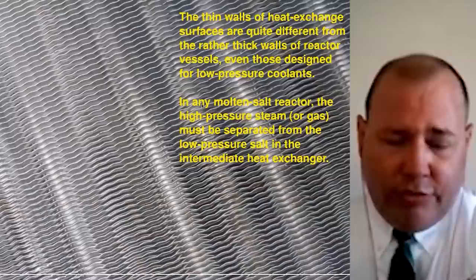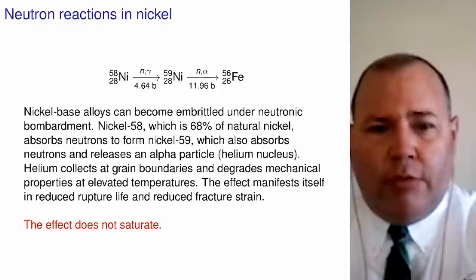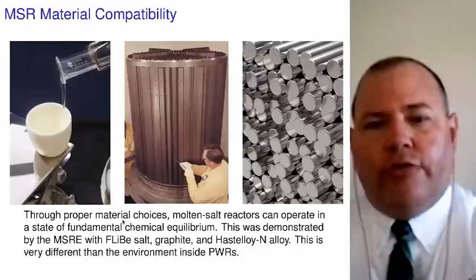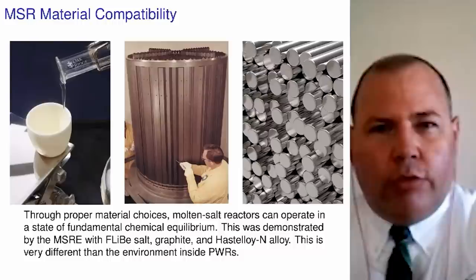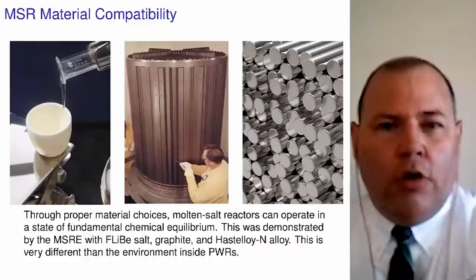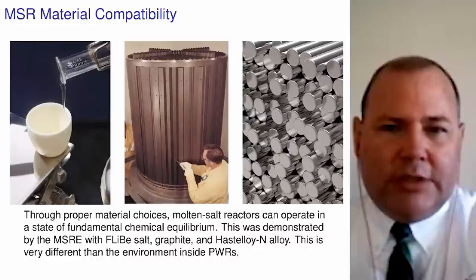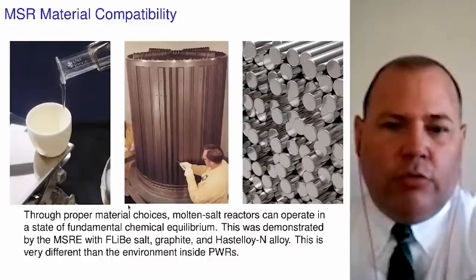The takeaways: go with FLiBe salt — proven from MSRE operation — go with Hastelloy-N, and go with graphite moderation. These three materials choices enable the molten salt reactor to operate in a state of chemical equilibrium. To contrast: in today's light water reactors, the water is not in chemical equilibrium with the zirconium cladding, and the zirconium cladding is not in chemical equilibrium with the uranium dioxide pellet. The fact that we were able to build reactors over 50 years ago with materials in chemical equilibrium is absolutely remarkable, and I think we should be talking more about this. It gives us a lot of confidence to go forward in the near term with safe and efficient molten salt reactors built around these three materials.